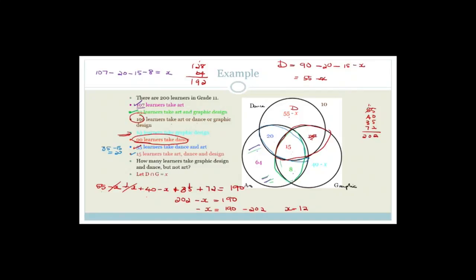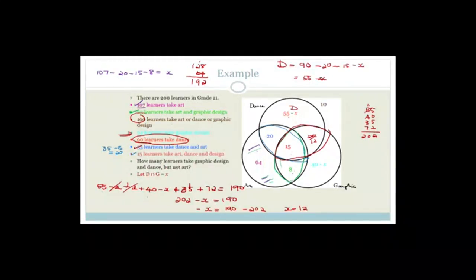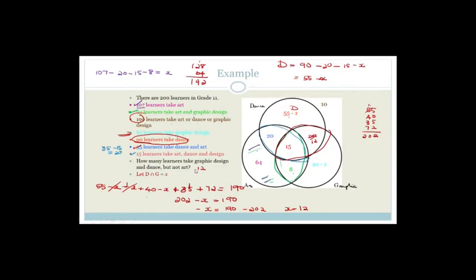So x is 12, and then you can work out the rest. How many learners take graphic design and dance but not art? That would only be x, which is 12.